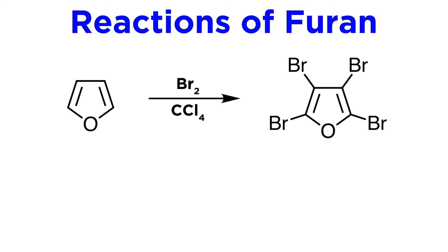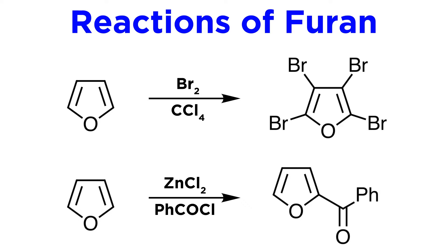For example, furan will react with bromine in carbon tetrachloride, and it will do so at a rate that is hard to control, which tends to result in tetrabromofuran. Friedel-Crafts reactions can also be performed, and these are a bit more selective, occurring primarily at carbon 2. This Friedel-Crafts acylation is an example of this kind of chemistry.